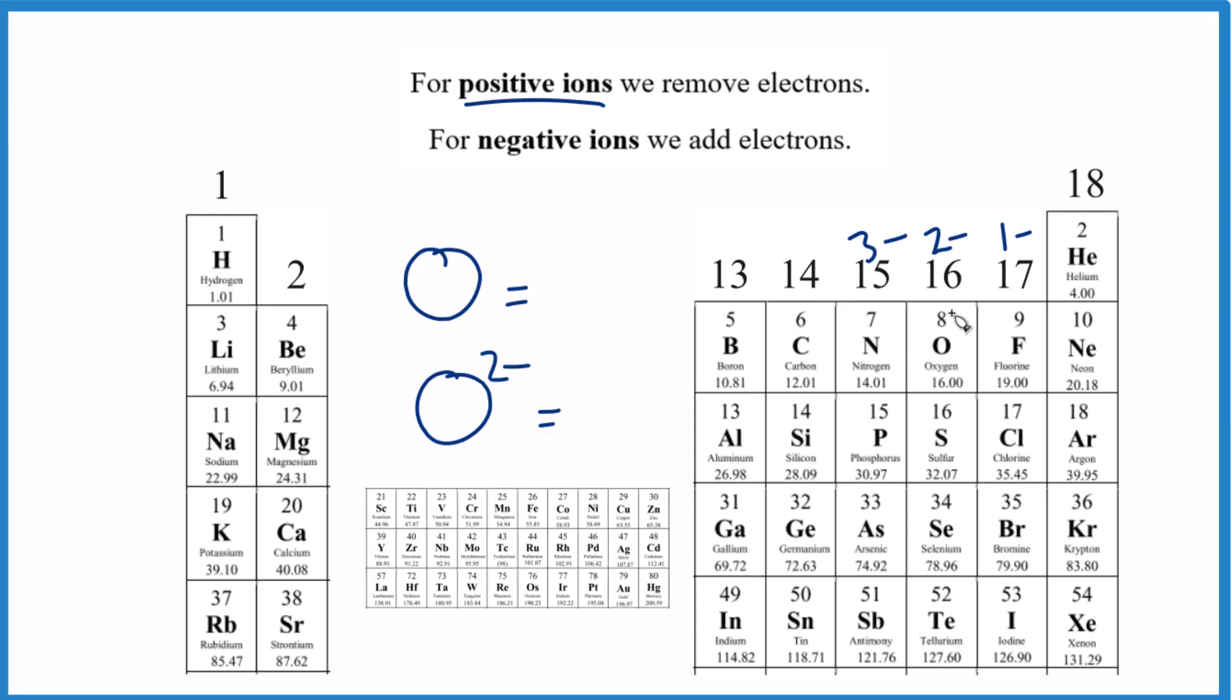So we said oxygen, atomic number eight, eight protons, and then eight electrons for the neutral oxygen. But here, when it's two minus, that means we got two more. So eight plus two, 10 total electrons in the oxide ion.